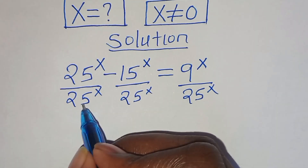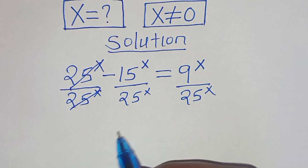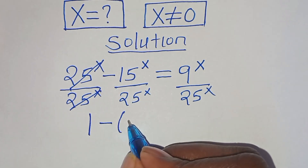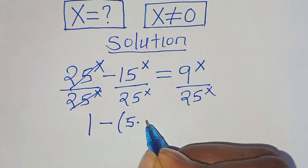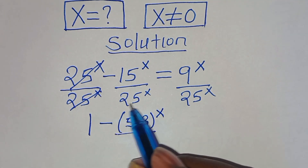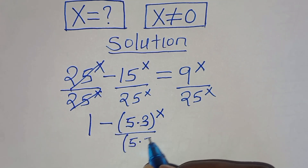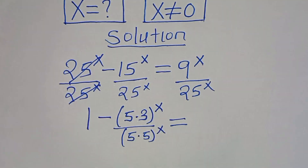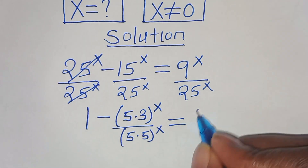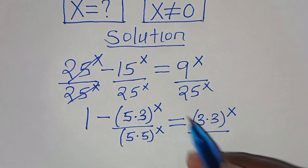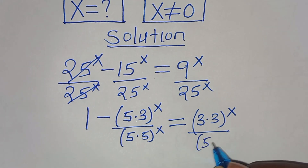Simplifying, 25 to the power of x cancels so that we have 1 minus. We can express 15 as 5 times 3, raised to the power of x, divided by 25 — which is 5 times 5 — raised to the power of x. This equals 9, which can also be expressed as 3 times 3, raised to the power of x, divided by 5 times 5 to the power of x.